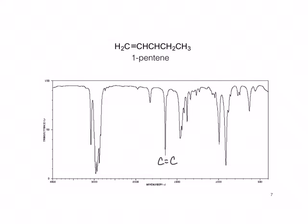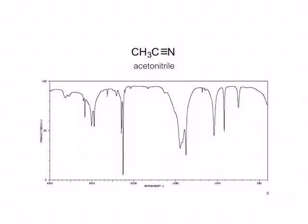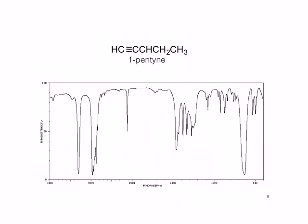Finally, let's look at the carbon-nitrogen triple bond. This is the spectrum for acetonitrile, whose structure is shown here. We see SP3 carbon-hydrogen peaks, and we also see the very sharp peak due to that carbon-nitrogen triple bond at about 2300 wavenumbers. The other peaks are probably due to impurities. The carbon-nitrogen triple bond will be much more intense than a carbon-carbon triple bond — for comparison, remember the spectrum of one pentyne, whose carbon-carbon triple bond is much less intense.